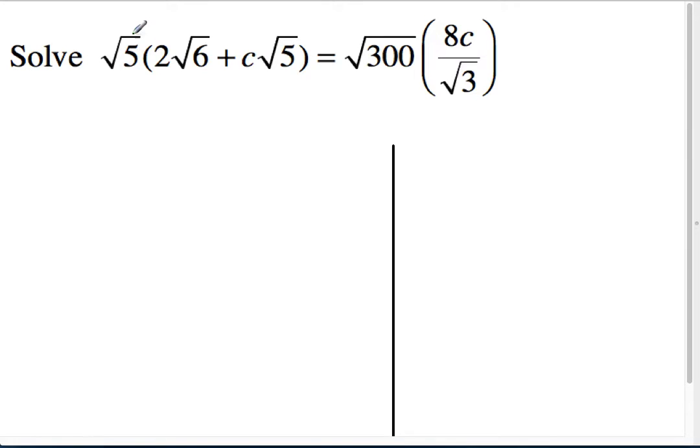Okay, then I'll go ahead and do the left side of the equal sign. So the square root of 5 is going to be distributed to 2 root 6 and c times root 5. So 2 times the square root of 5 times 6 is 30, plus c times root 5 times root 5 is going to be 5c.